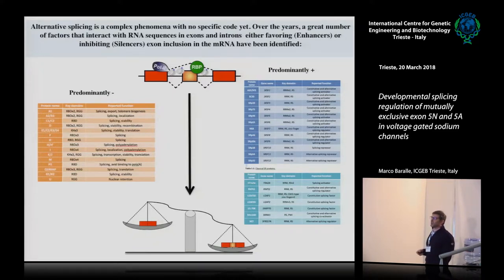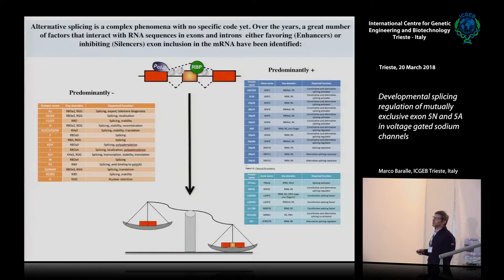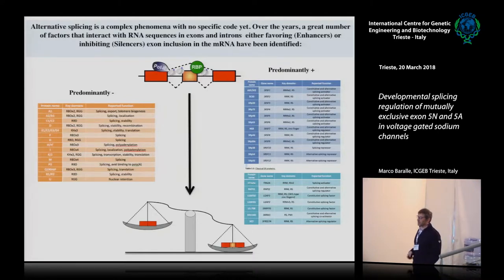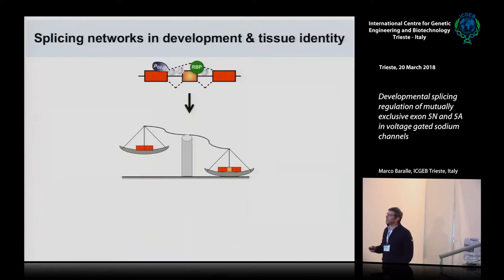Splicing can also be regulated — there are studies showing it can be regulated by the elongation speed of RNA polymerase II, and also there are epigenetic markers that can regulate the inclusion or exclusion of an exon.